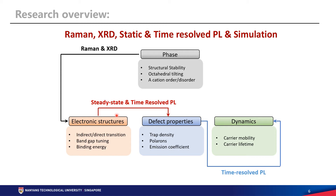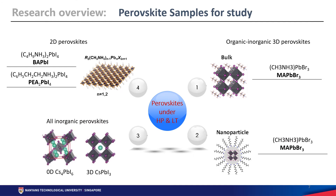Using steady and time-resolved PL, we mainly study the electronic structure, defect properties, and dynamics. Using Raman and XRD, we mainly study the structural stability, octahedral tilting, and so on. We have studied different materials: bulk 3D material, nanoparticles, 2D materials, and all-inorganic perovskites such as cesium lead iodide materials.